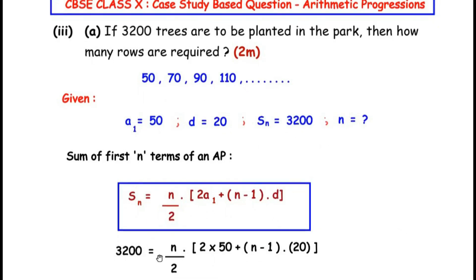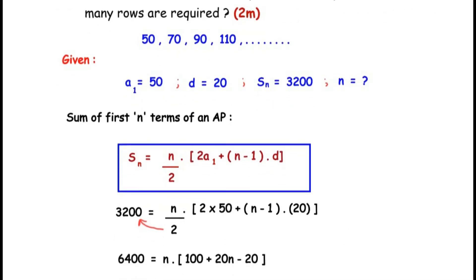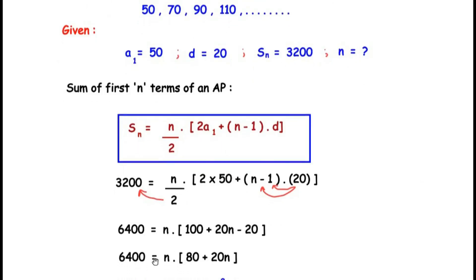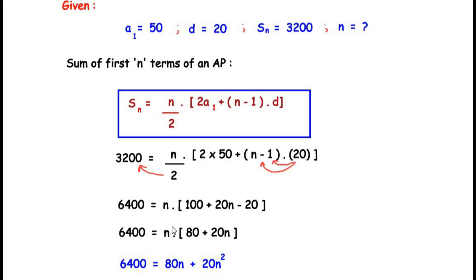Substituting values: 3200 = (n/2) × [2 × 50 + (n − 1) × 20]. Multiplying both sides by 2: 6400 = n × [100 + 20n − 20]. Simplifying the bracket: 6400 = n × (80 + 20n), which expands to 6400 = 80n + 20n².